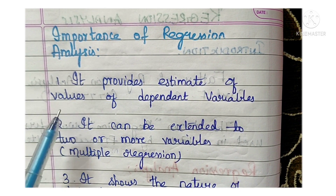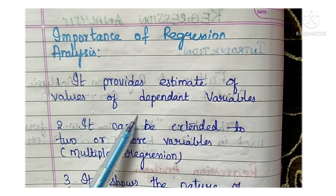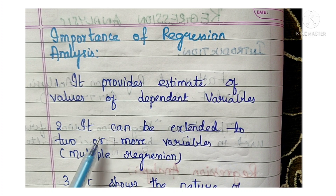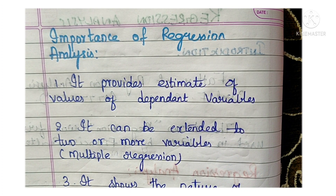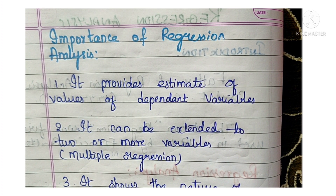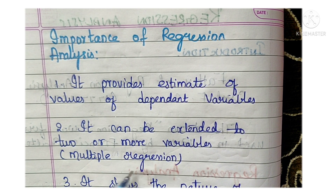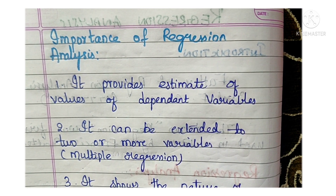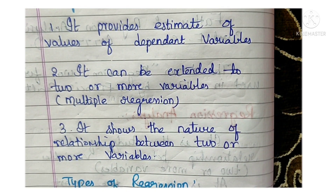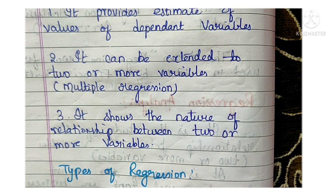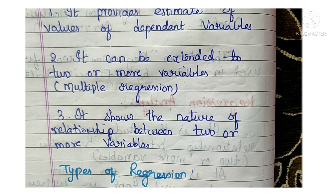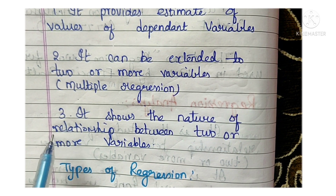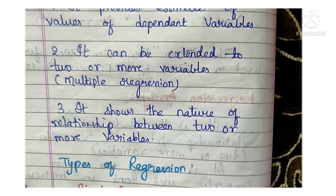Importance of regression analysis: It provides an estimate of values of dependent variables. It can be extended to two or more variables, which is why studying multiple variables is called multiple regression. It also shows the nature of the relationship between variables — whether the relationship is positive or negative, and in what direction it is going.